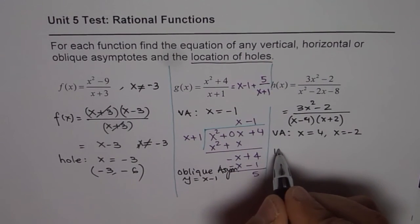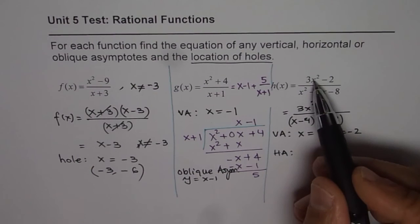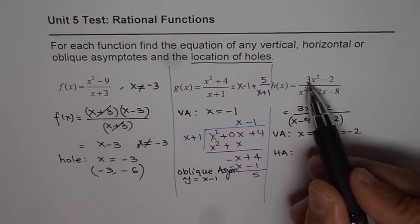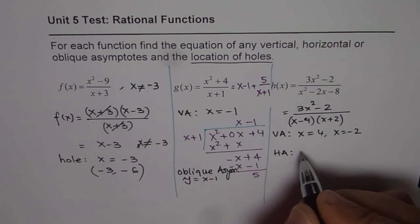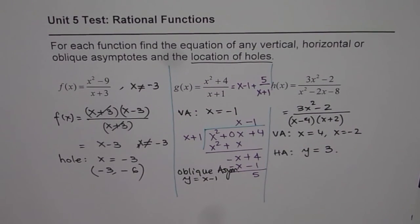What you also notice is that the degree of numerator and denominator is same. So we have horizontal asymptote in this case. And the equation is the ratio of the leading coefficients, which is 3 and 1. So here, the horizontal asymptote is at y equals to 3. So that is how we can answer this question.